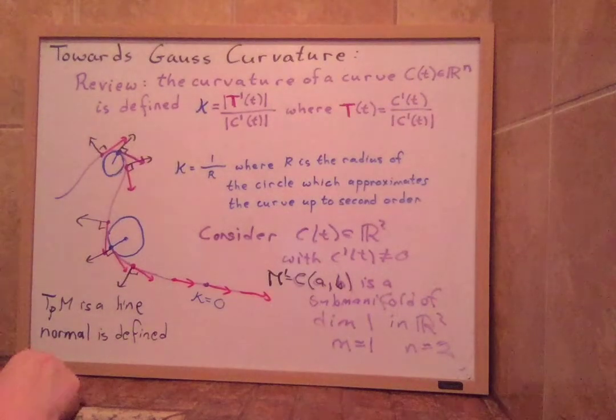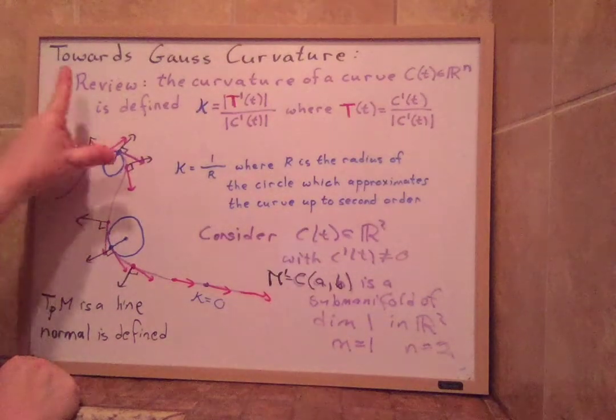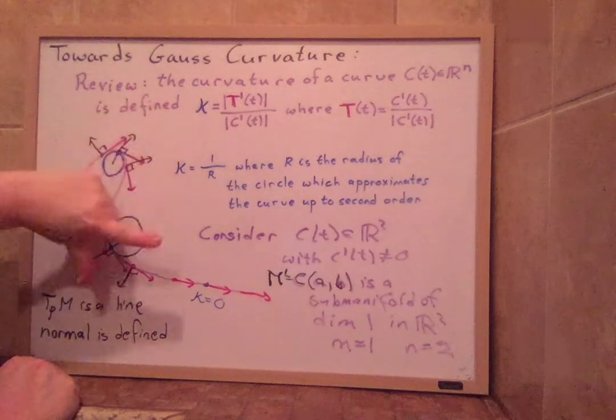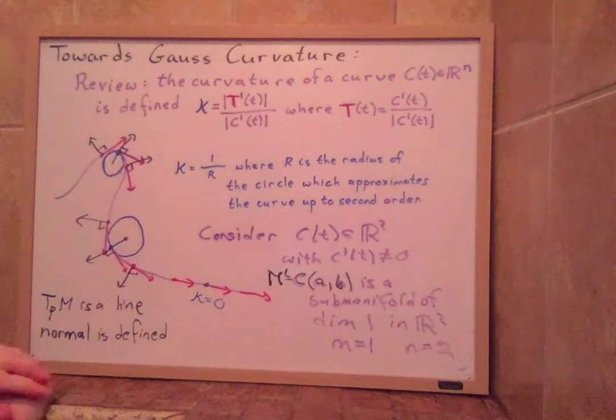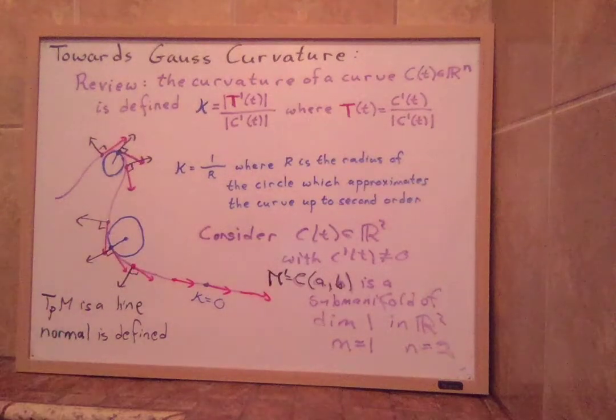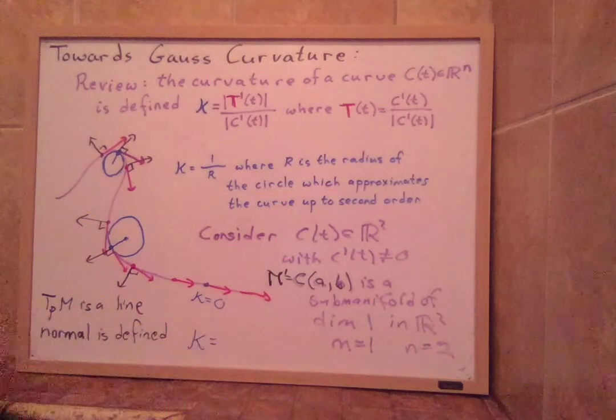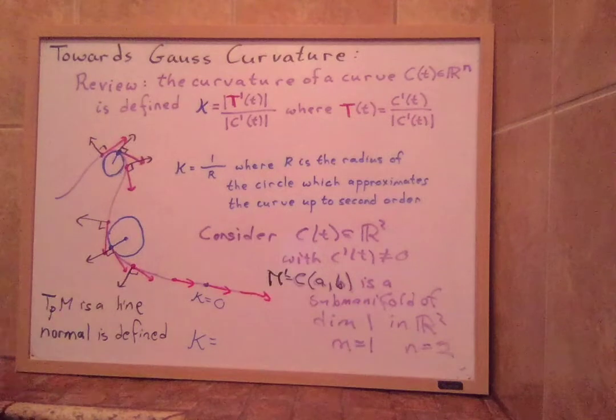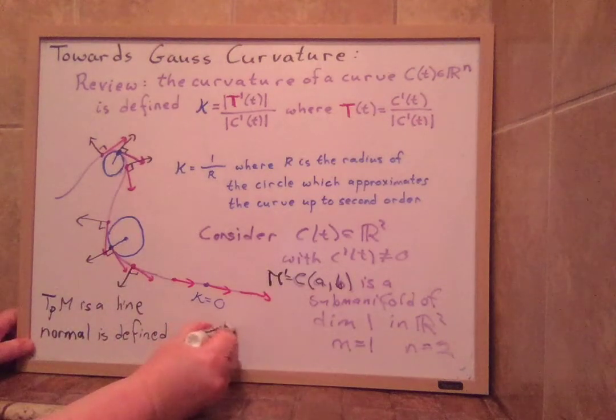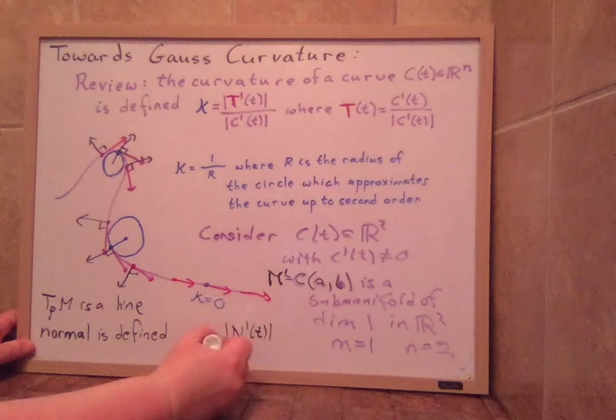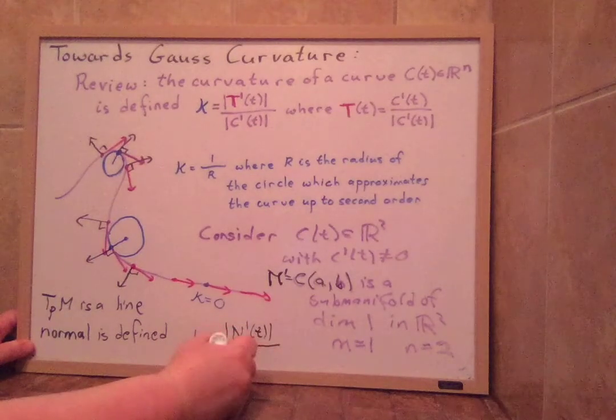You will notice that the normals change also exactly the same as the tangents do. So the change in the normals is actually agreeing completely with the change in the tangents. So actually you get a theorem that the curvature is equal to the normals changing over time divided by C prime of T.